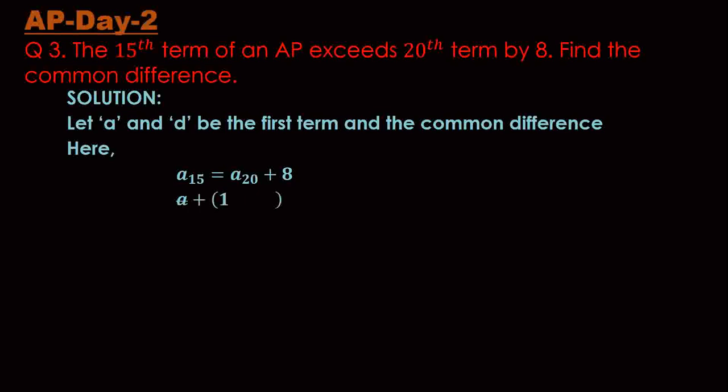So a + (15-1)d = a + (20-1)d + 8, and a cancels. Then 15-1 is 14, so 14d = 19d + 8. Now transfer the 19d to the left hand side: 14d - 19d.